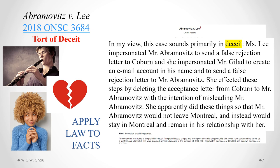Eventually Eric did find out about this deception and he sued Jennifer. The court found that there was a tort of deceit in this case. The court said that Jennifer had impersonated Eric to send a false rejection letter to Colburn, and impersonated Mr. Galad to create an email account in his name and send a false rejection letter to Eric. She deleted the acceptance letter with the intention of misleading Eric — apparently so that he would not leave Montreal and would remain in his relationship with her.